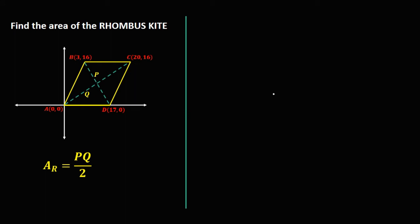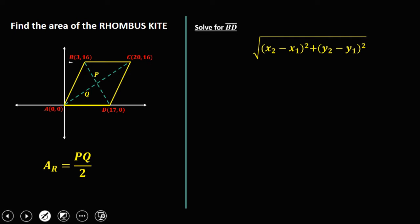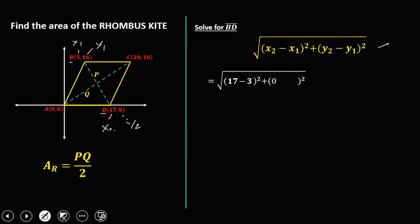So compute now the distance from point B to point D, or line BD, using the distance formula. So this one is B and D. This is X sub 1 and Y sub 1, and this is X sub 2 and Y sub 2. So substitute now these values to this formula. So we have X sub 2, that's 17, minus X sub 1, that's 3. Then Y sub 2, that's 0, minus Y sub 1, that's 16.